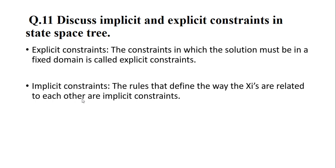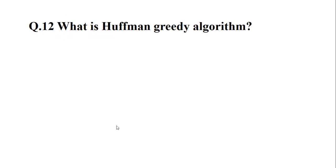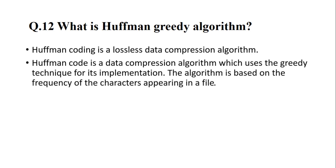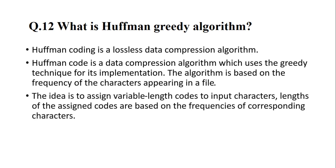Question 12: What is Huffman's greedy algorithm? Huffman coding is a lossless data compression algorithm. Huffman code is a data compression algorithm which uses a greedy technique for its implementation. The algorithm is based on the frequency of the characters appearing in a file. The idea is to assign variable-length codes to input characters; the length of the assigned codes is based on the frequencies of the corresponding characters.